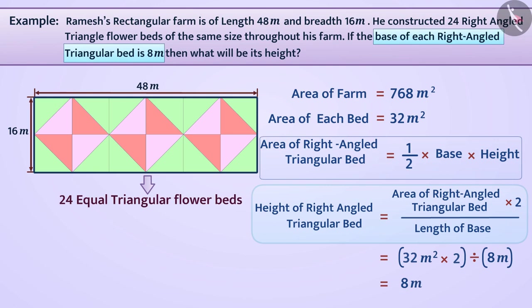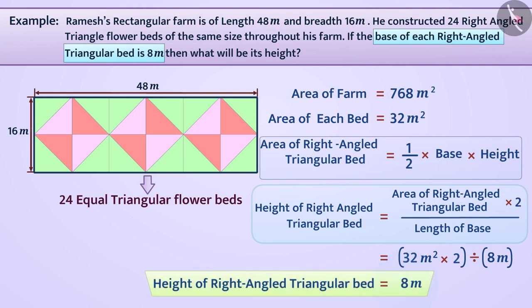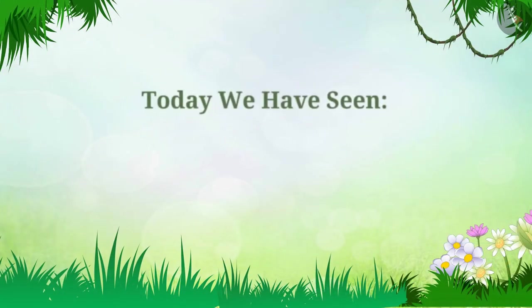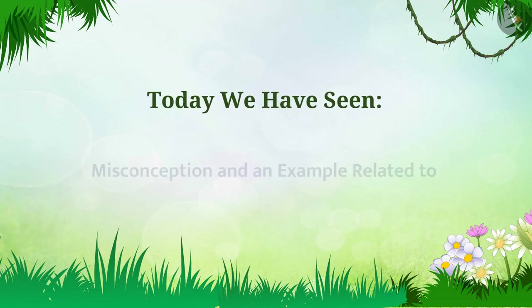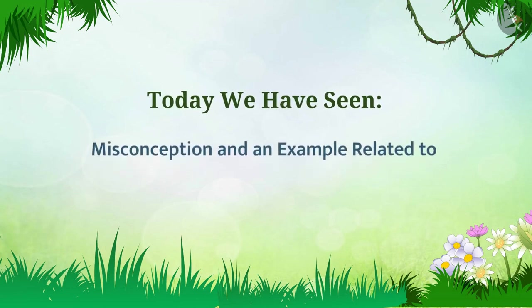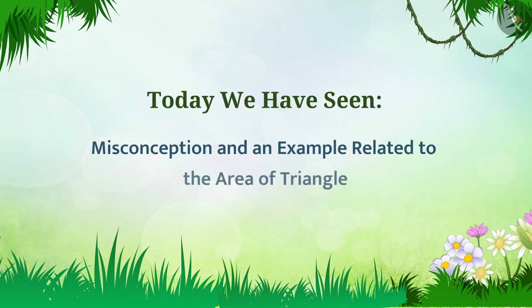So, in Ramesh's field, the height of each right angle triangular bed is 8 meter. Today we have seen a misconception and an example related to area of triangle.